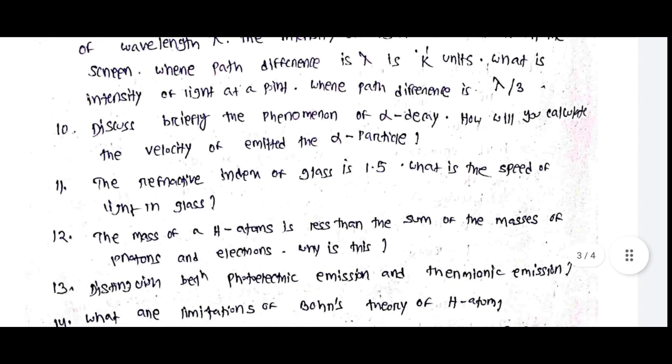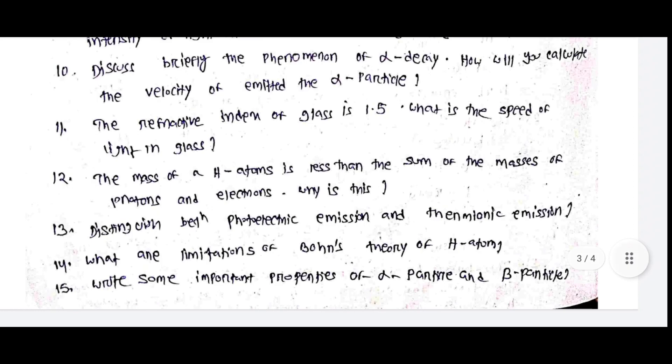The refractive index of glass is 1.5. What is the speed of light in glass? The mass of a hydrogen atom is less than the sum of the masses of protons and electrons. Why is this?